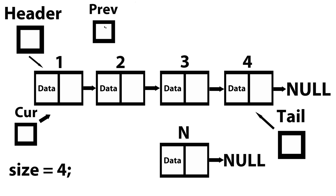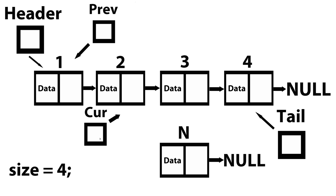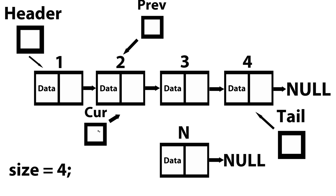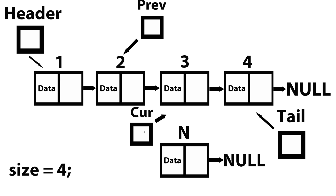We need to traverse the list and execute a loop to do that. First, prev is going to point to what current is pointing to, then we advance current to the next node. The loop executes again: prev points to what current is pointing to, and then current advances to the next node. We stop here because we want to insert at position three. Let's think of this logically — we want to insert n at position three, and who has a pointer to position three? Prev has a pointer to the node that has a pointer to position three.